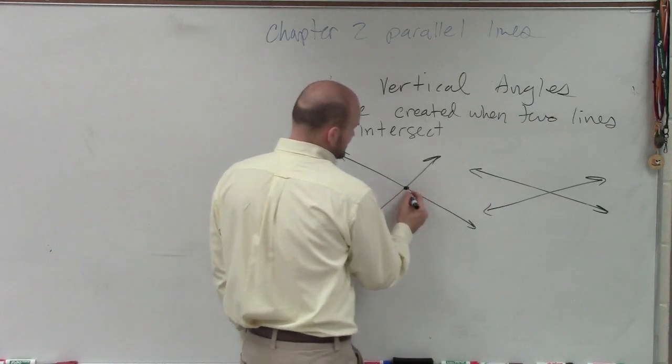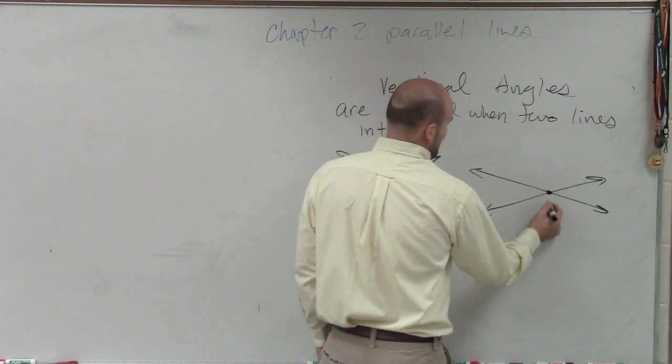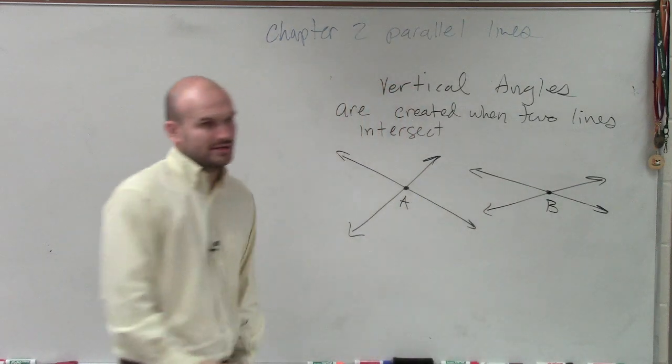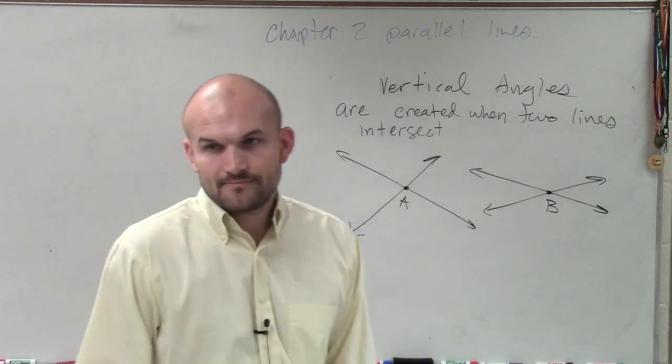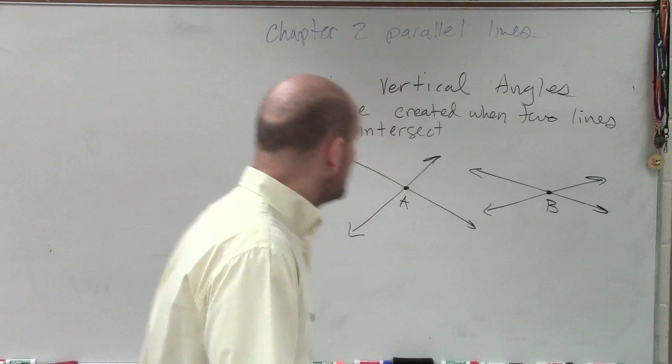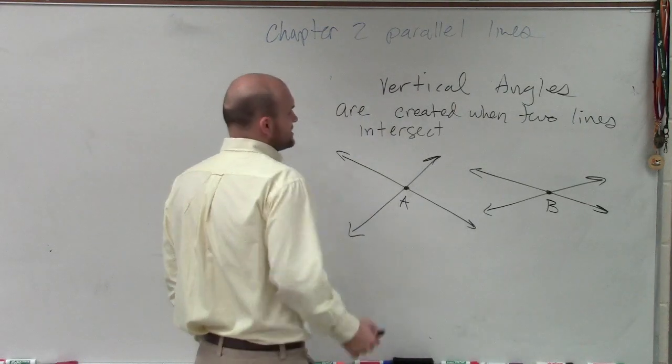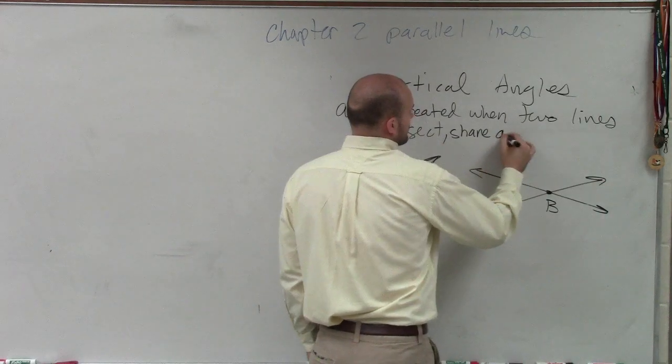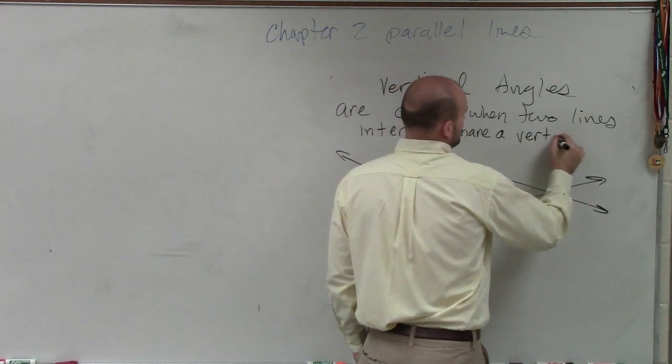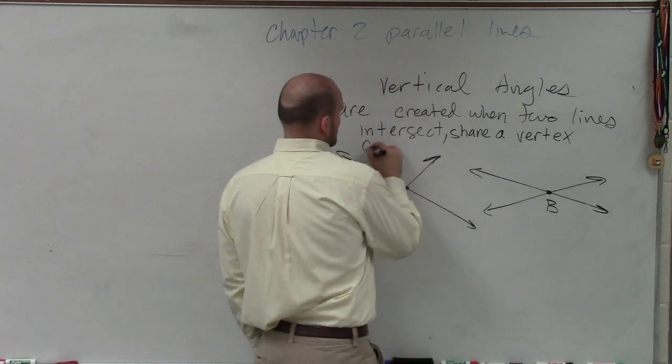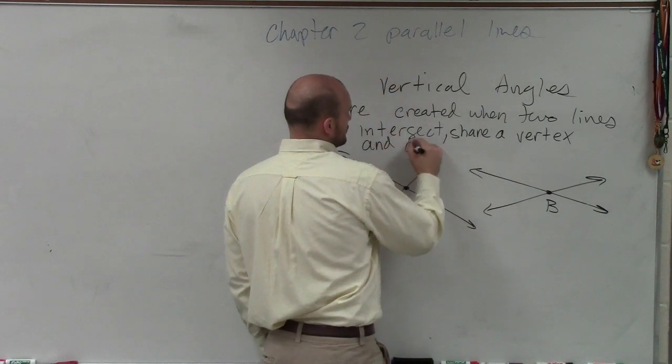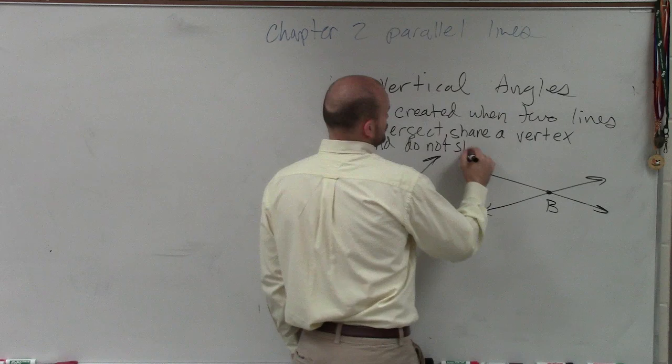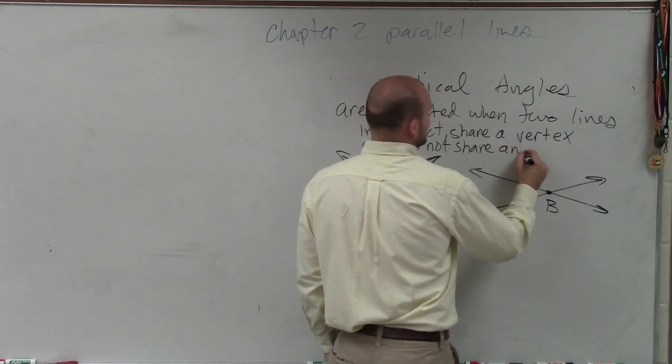And each one of these lines, you can see that they have a vertex or an intersection point. So vertical angles are created when two lines intersect. They share a vertex and do not share any sides.